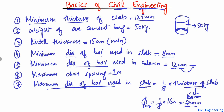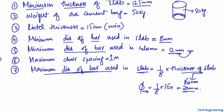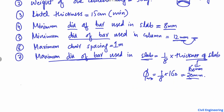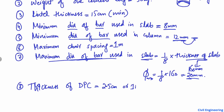The next point is the thickness of DPC (Damp Proof Course). The thickness of DPC is mostly 2.5 centimeters, which is equal to 1 inch. This is the standard thickness of DPC used in construction.